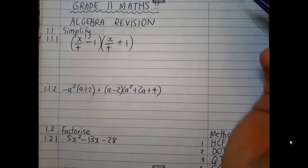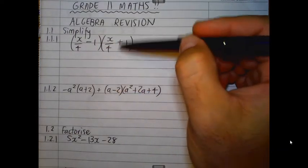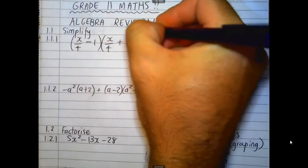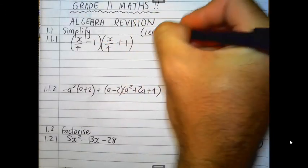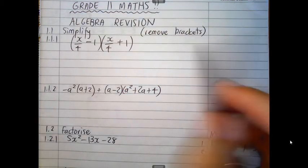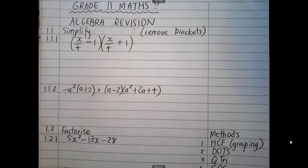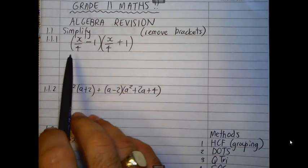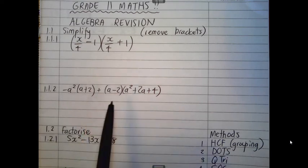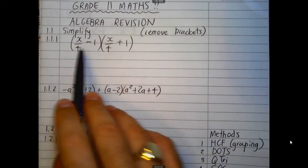Question 1.1, these two questions here have the heading to simplify. And simplifying questions often entail to remove the brackets. So we're going to multiply it out or make it look simpler. In this case here, removing of brackets. So the first question, you've got two sets of brackets here, both containing binomials. There are both two terms in each of these brackets.